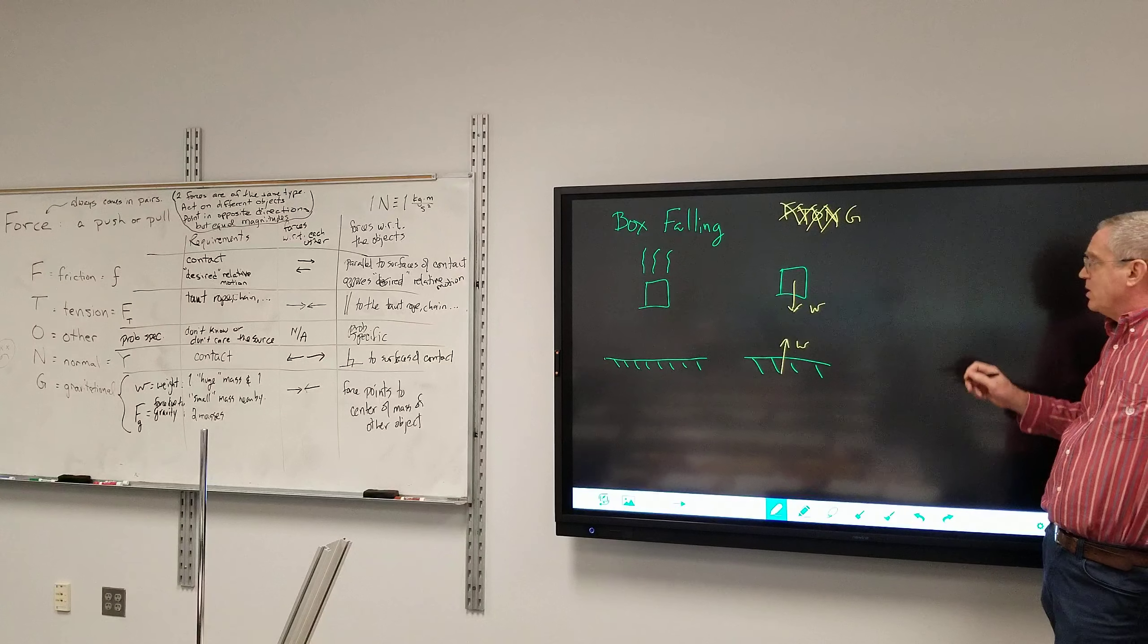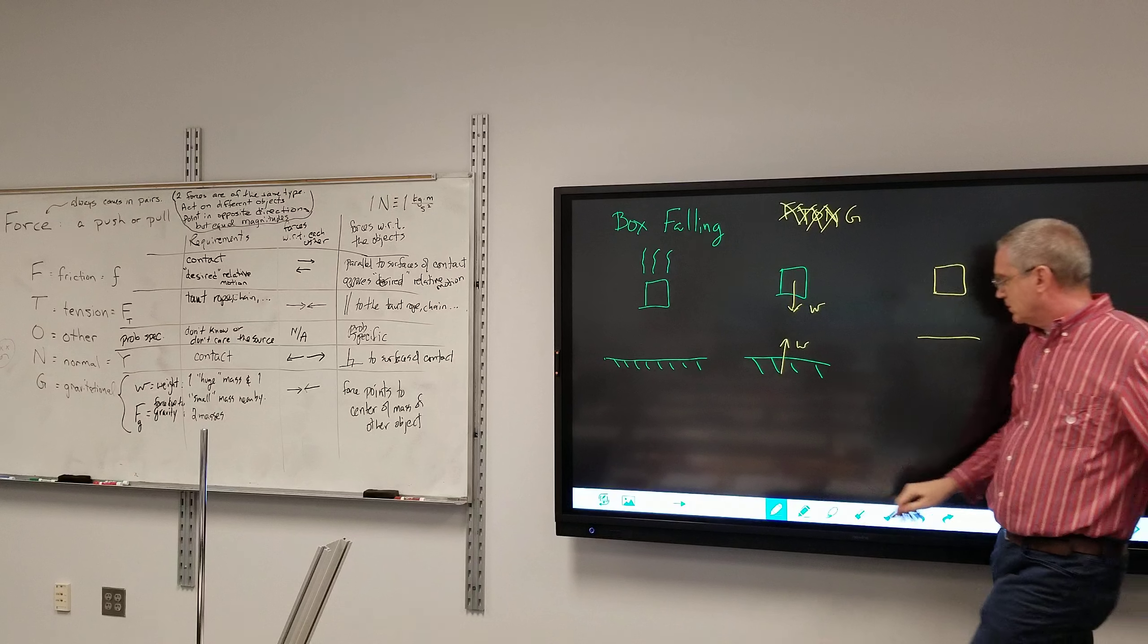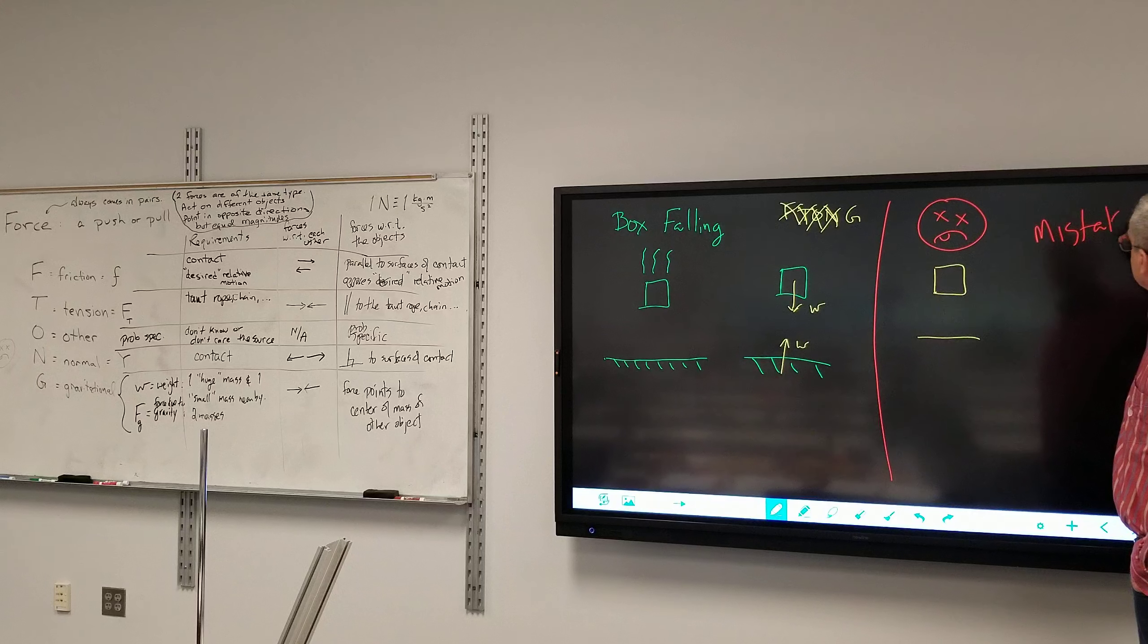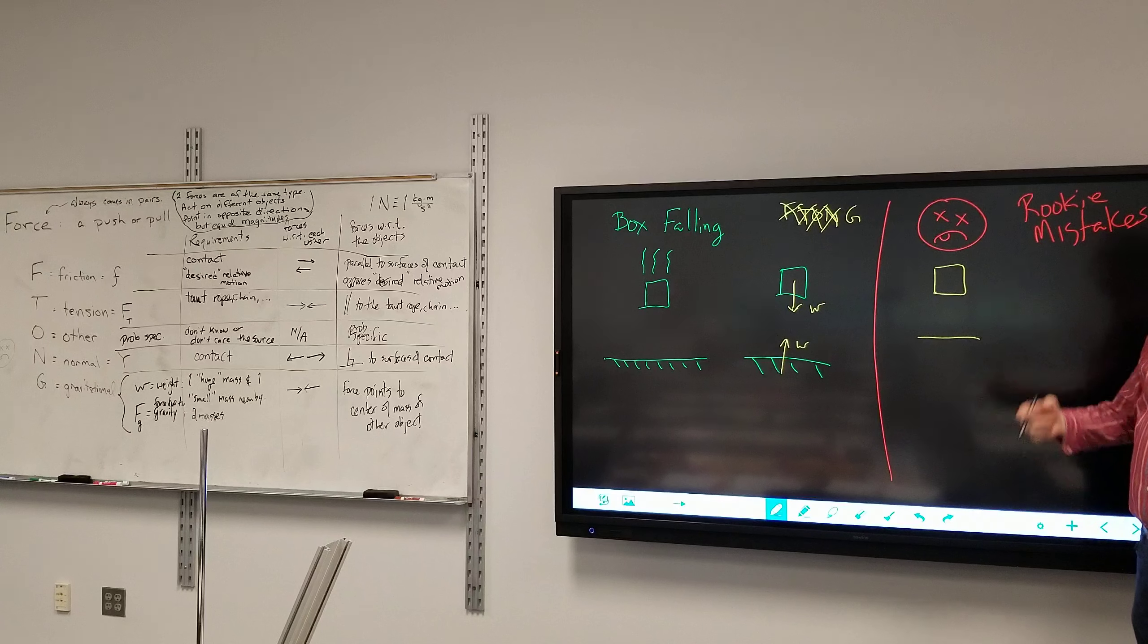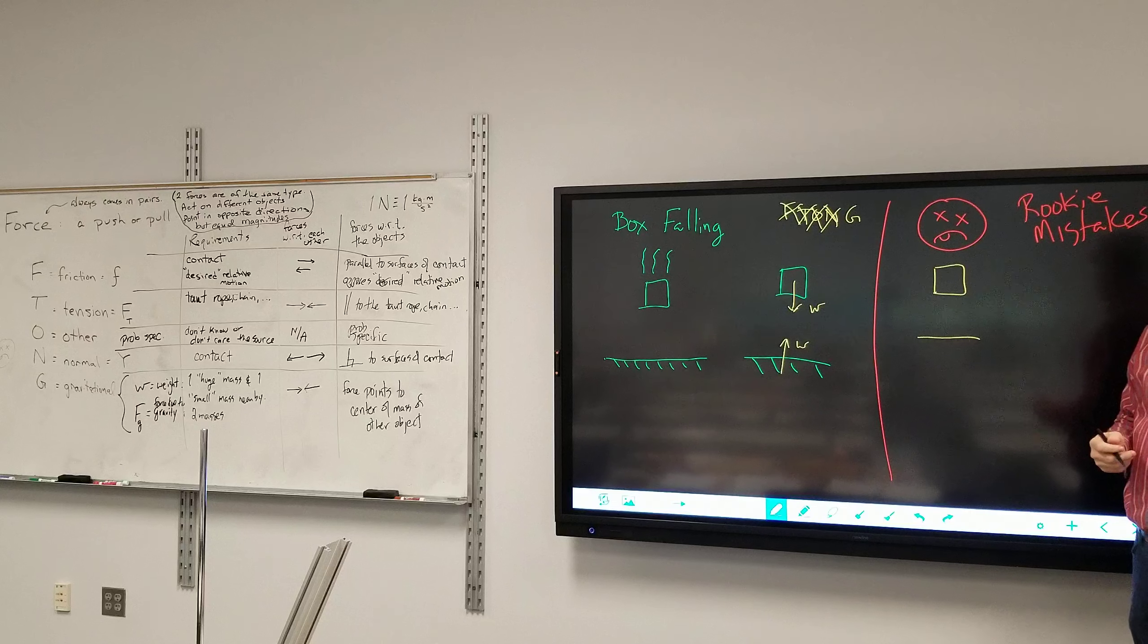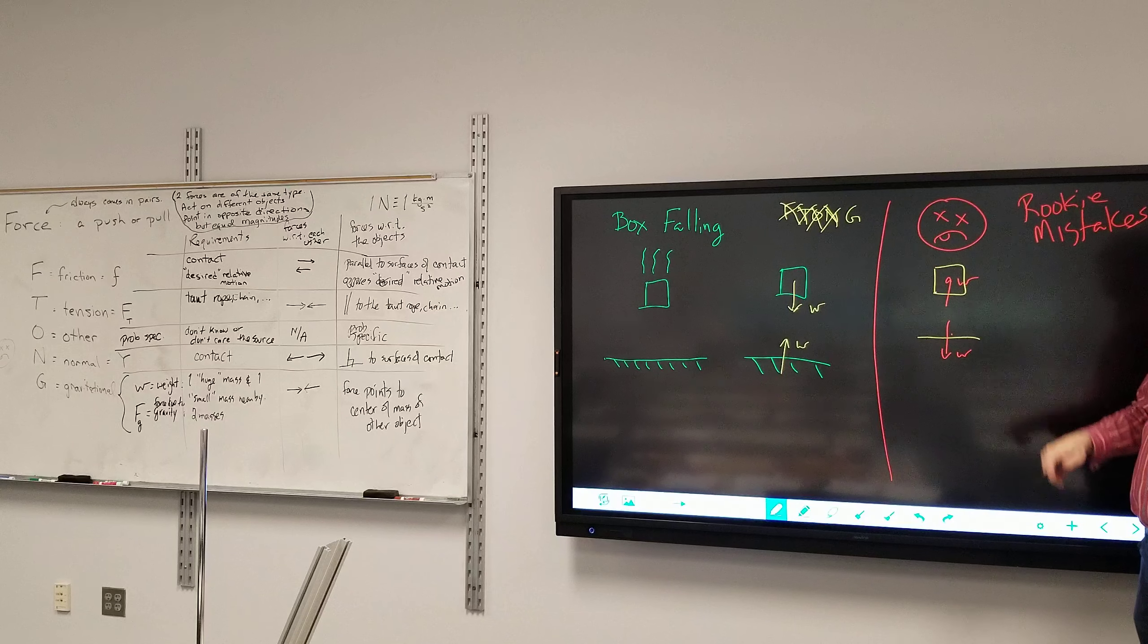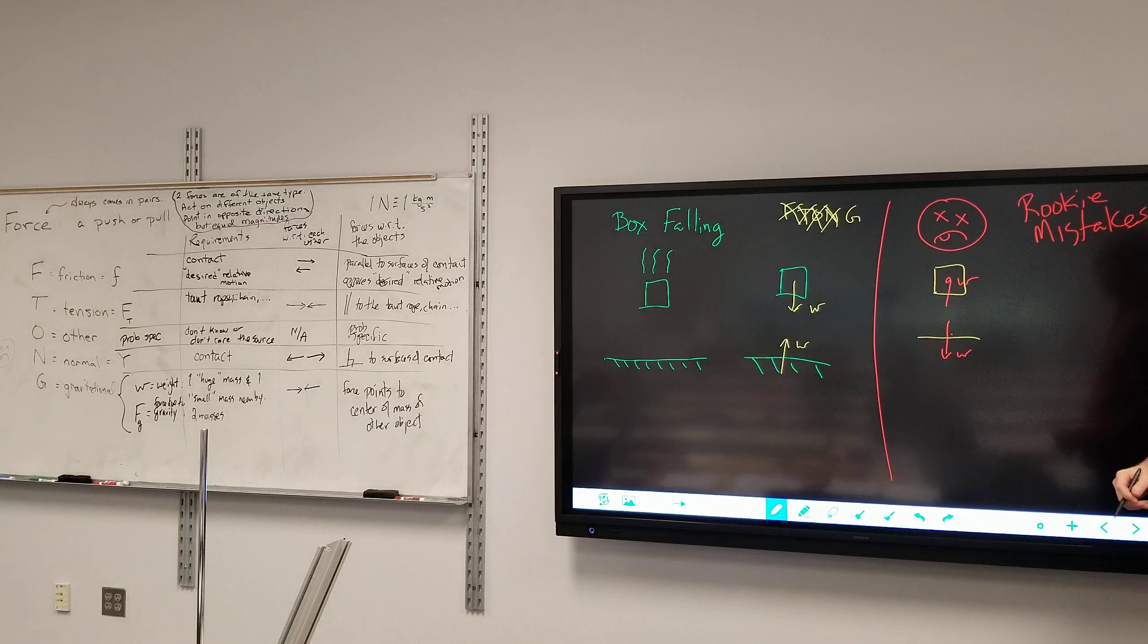Now, rookie mistakes. Rookie mistake number one. Putting the force on the source of the force and not the receiver. Because it requires two objects, one is the source, one is the receiver. And so, in essence, having it backwards. This would say that the weight is pushing up on the box. So, if I took a box and let go, it would go up in the air. People do what? Some people reversed where the arrows go.